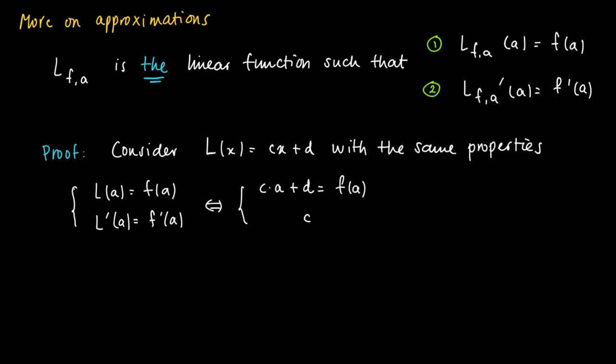And the differentiation returns the derivative c for the linear function, and it should equal F prime A. Now we may solve for c and d. Since c equals F prime of A and we substitute the value in the upper equation, we get d equals F of A minus F prime A times A. So we immediately see that c and d are uniquely determined.